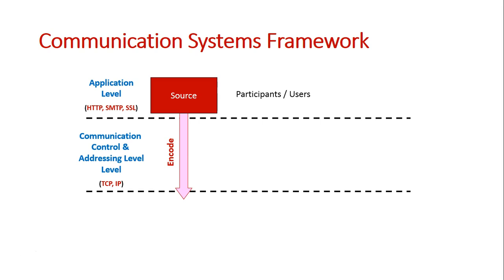The message is applied with the IP address so it can find its destination device. The TCP protocol can also be used for error detection — it makes use of the checksum method of error detection, and basically ensures that once the actual message gets to the recipient, confirmation is given back saying it arrived correctly.